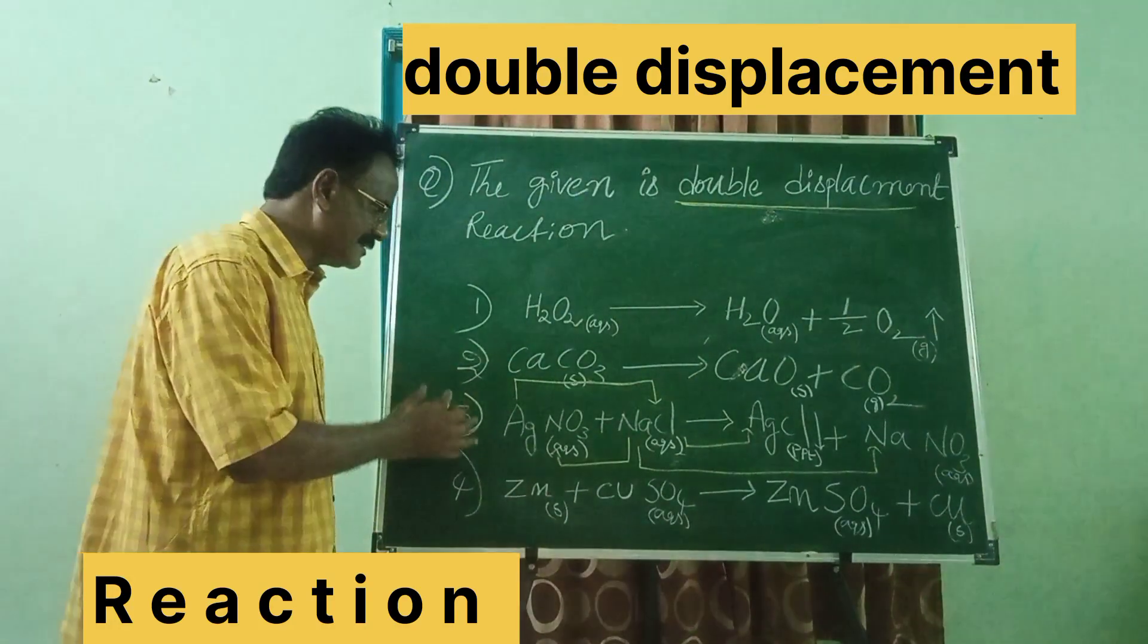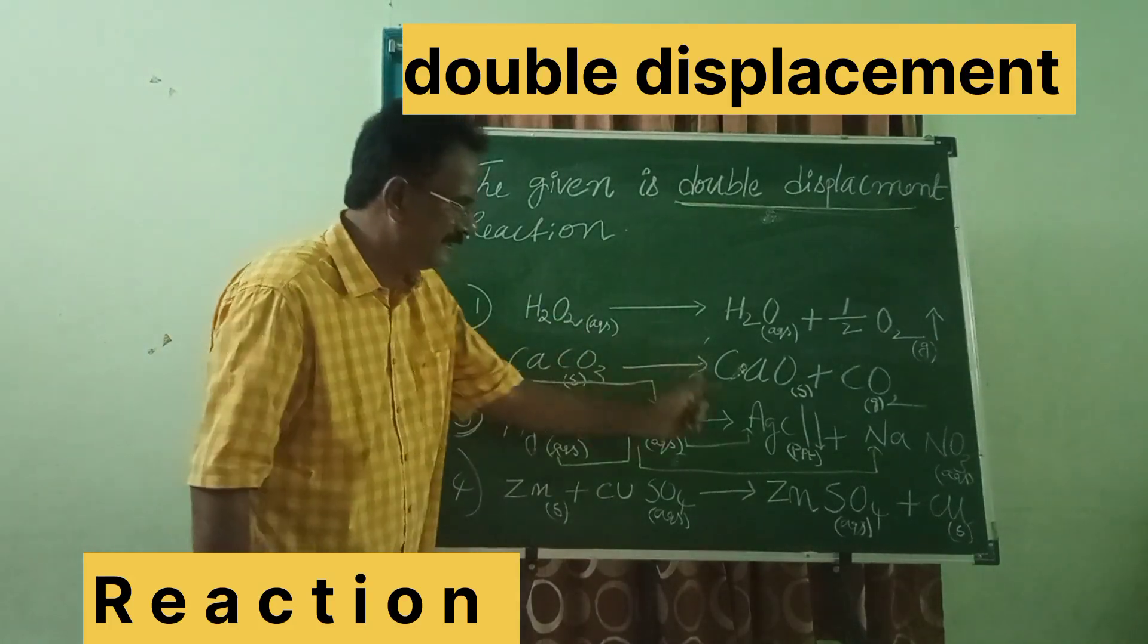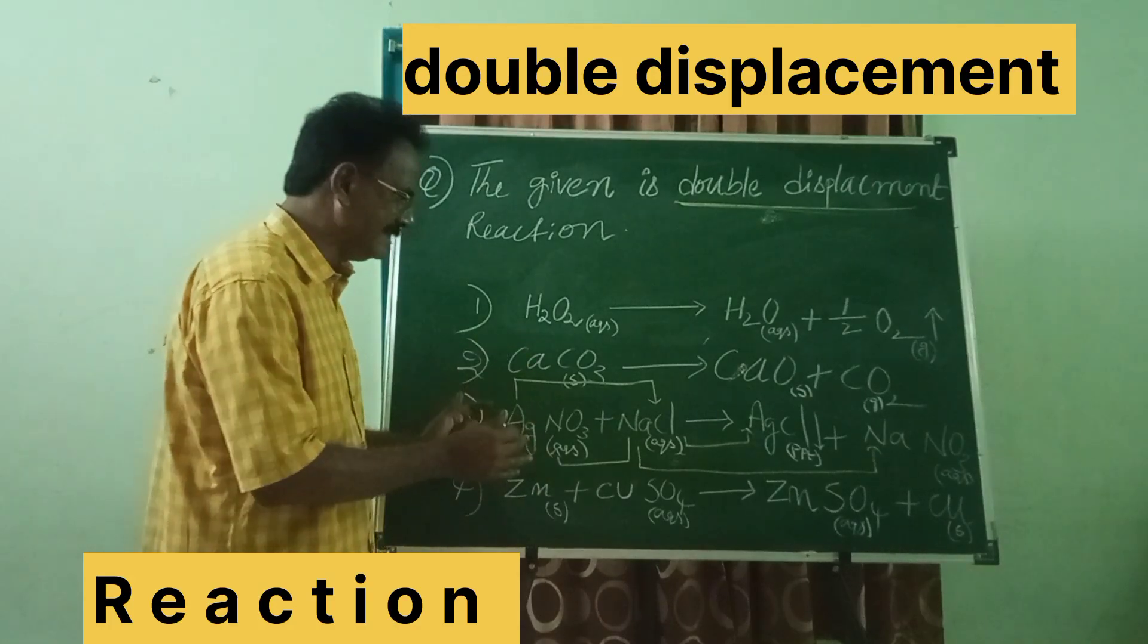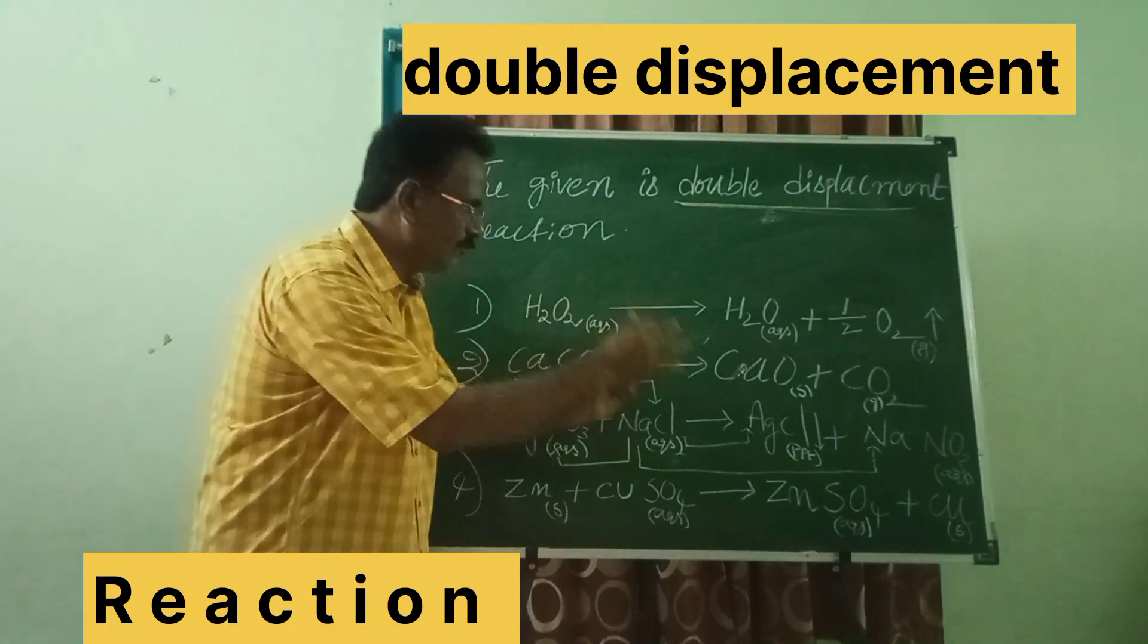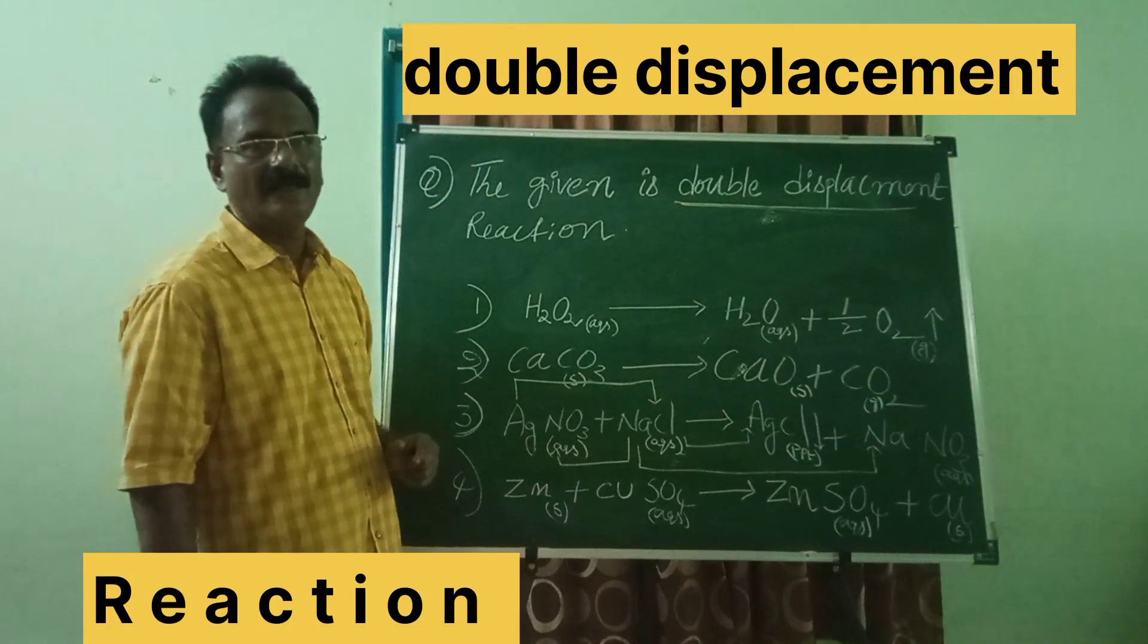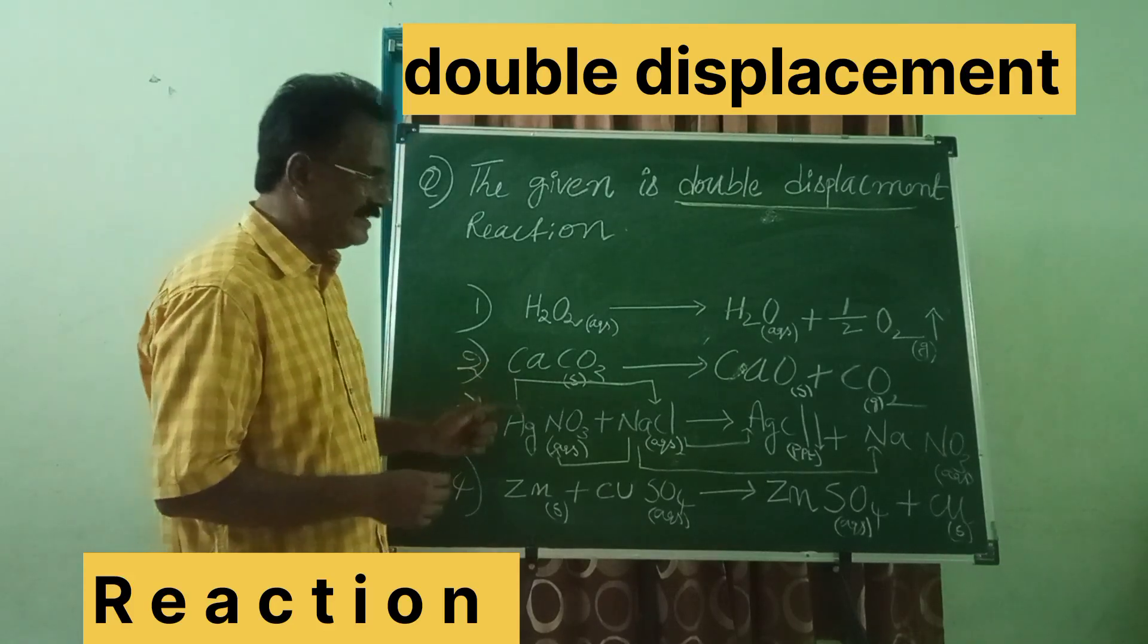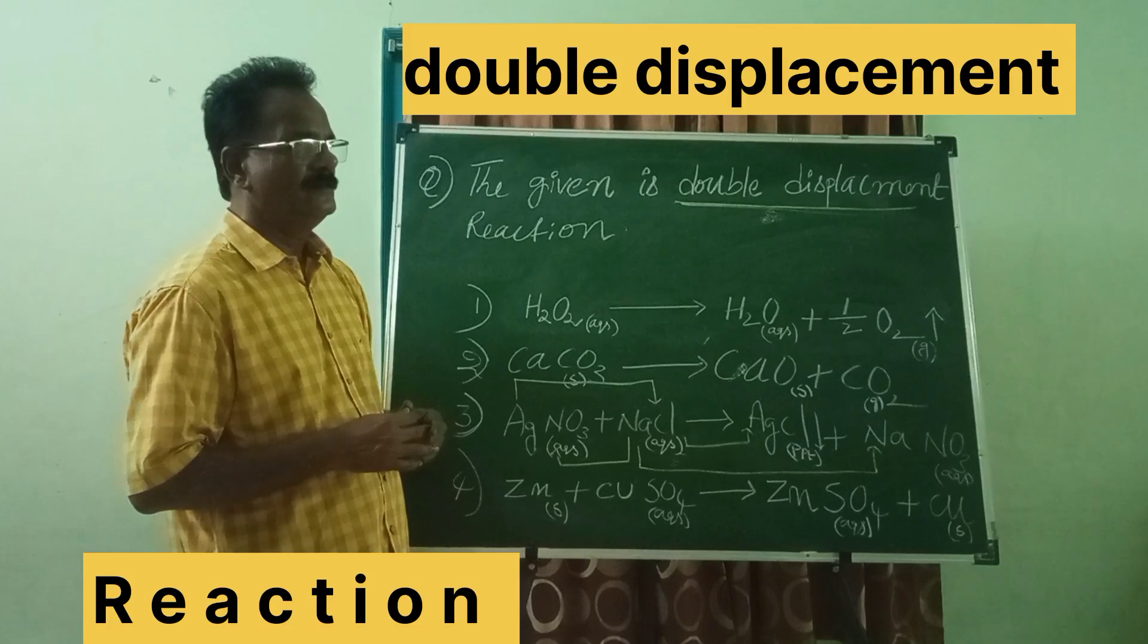Ag plus ion displacing and combining with Cl minus to give AgCl. Now, from NaCl, sodium displacing to give NaNO3 after combining with NO3. So, this is definitely double displacement reaction.